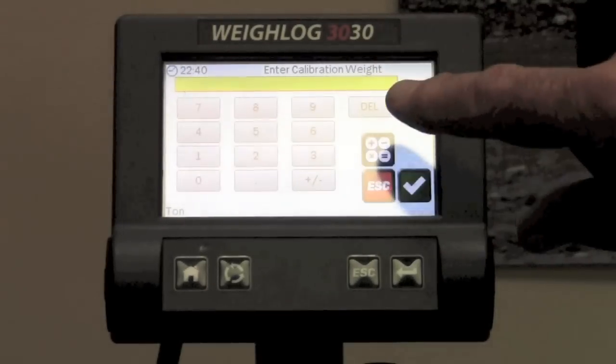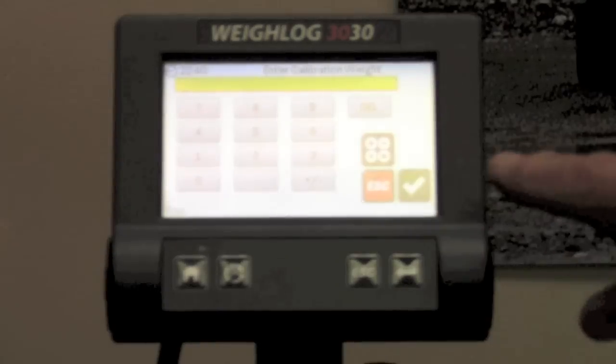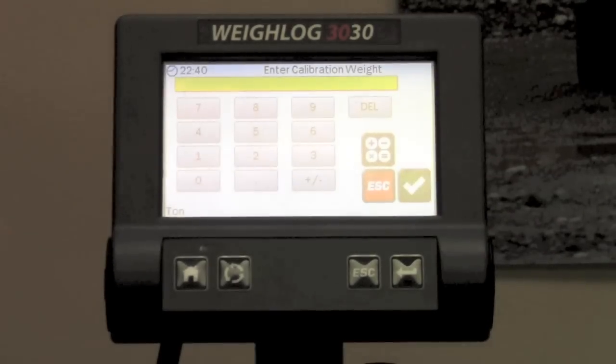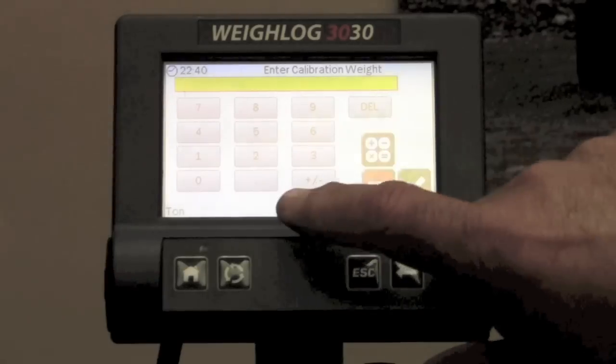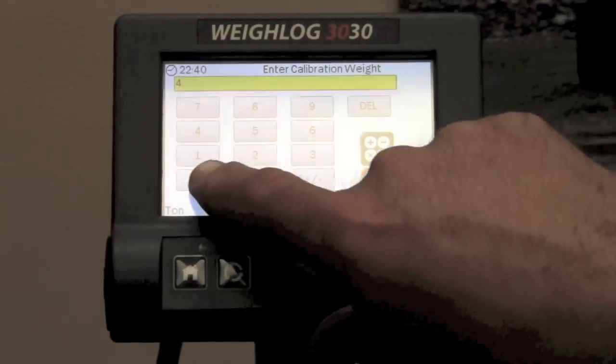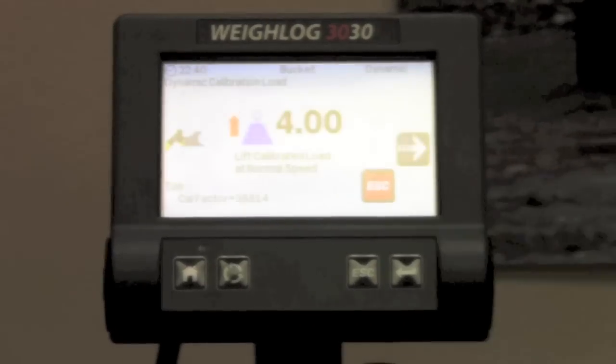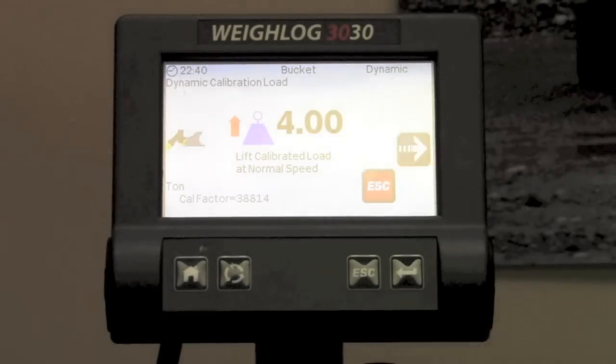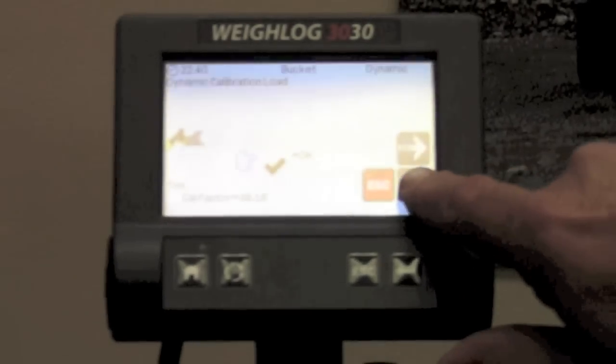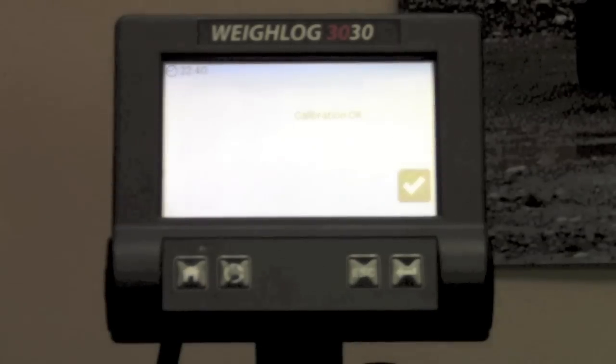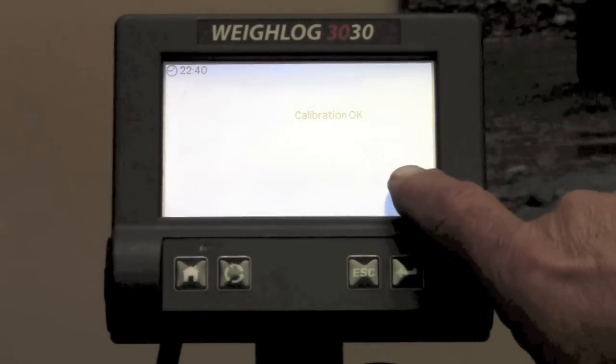You press the OK key. At this point we are going to enter the calibration weight. For our example, we are in tons and so we are just going to enter 4.0 tons as our calibration weight. And we are going to lower the bucket and lift it. And it has in fact taken our calibration.